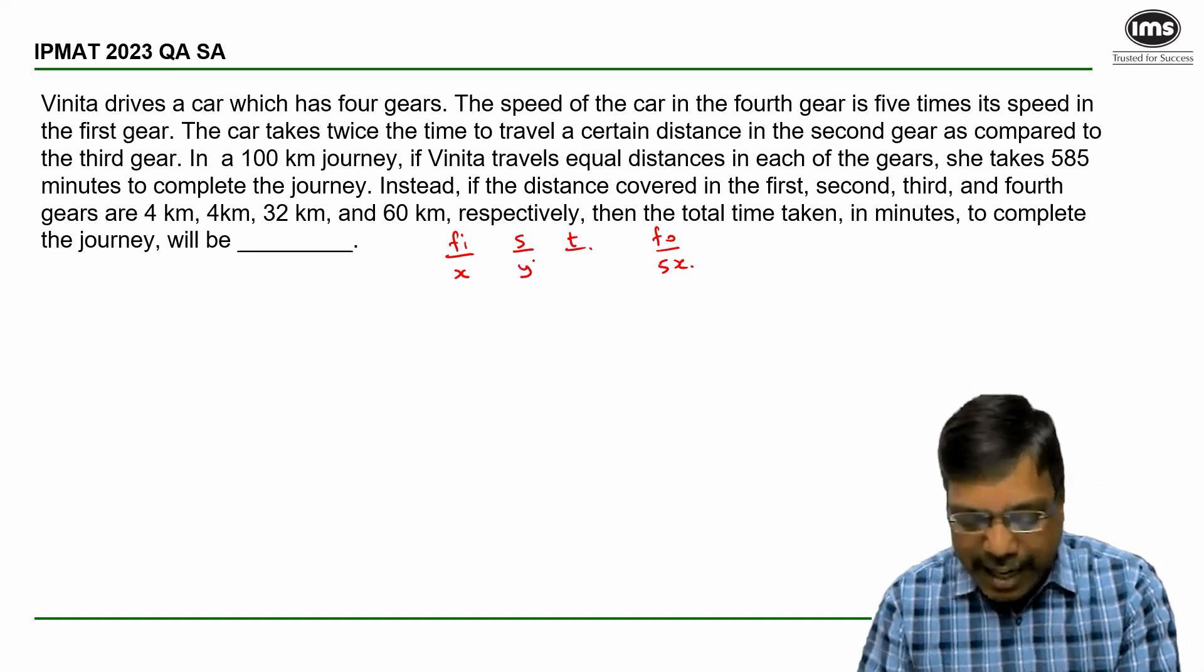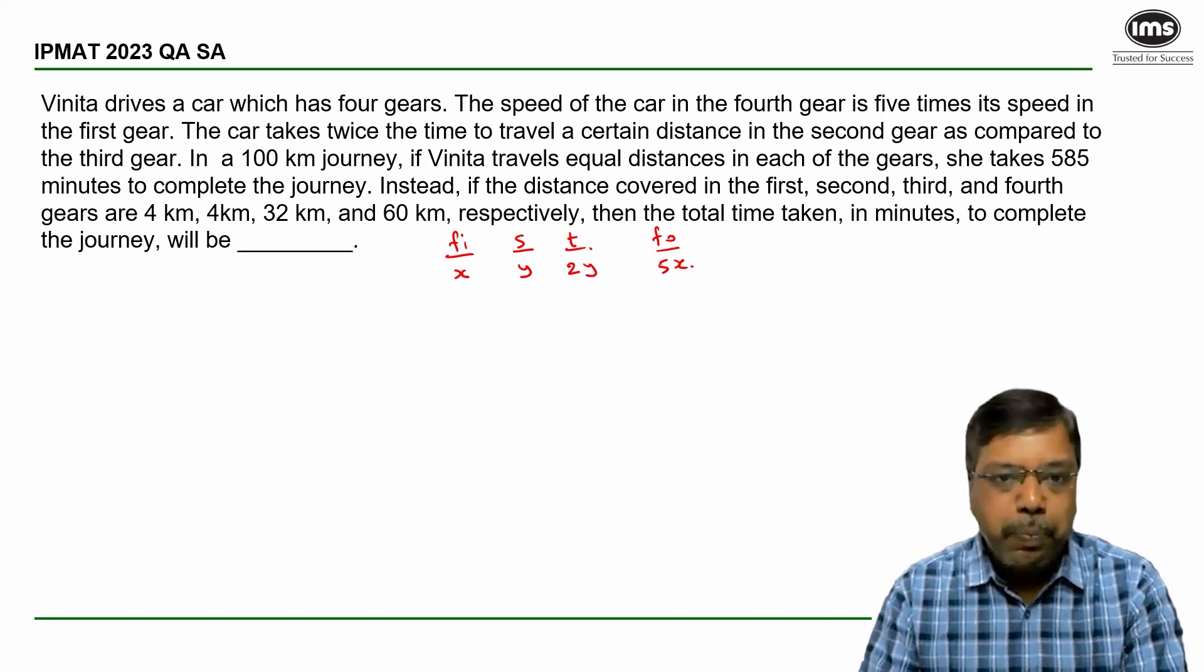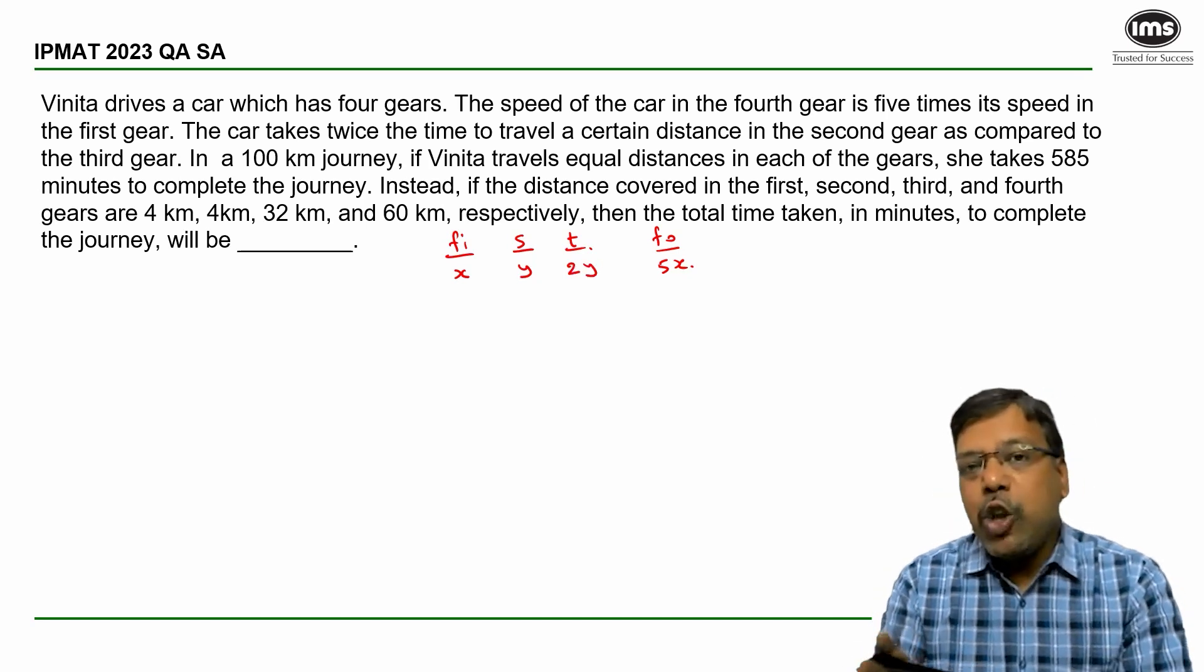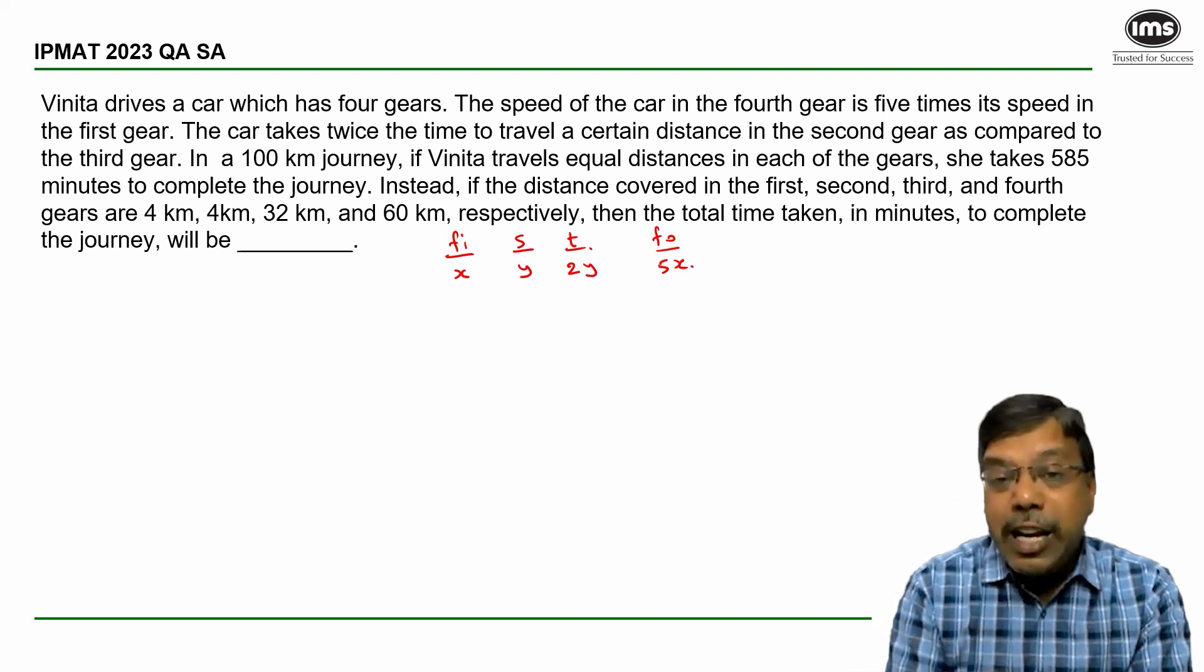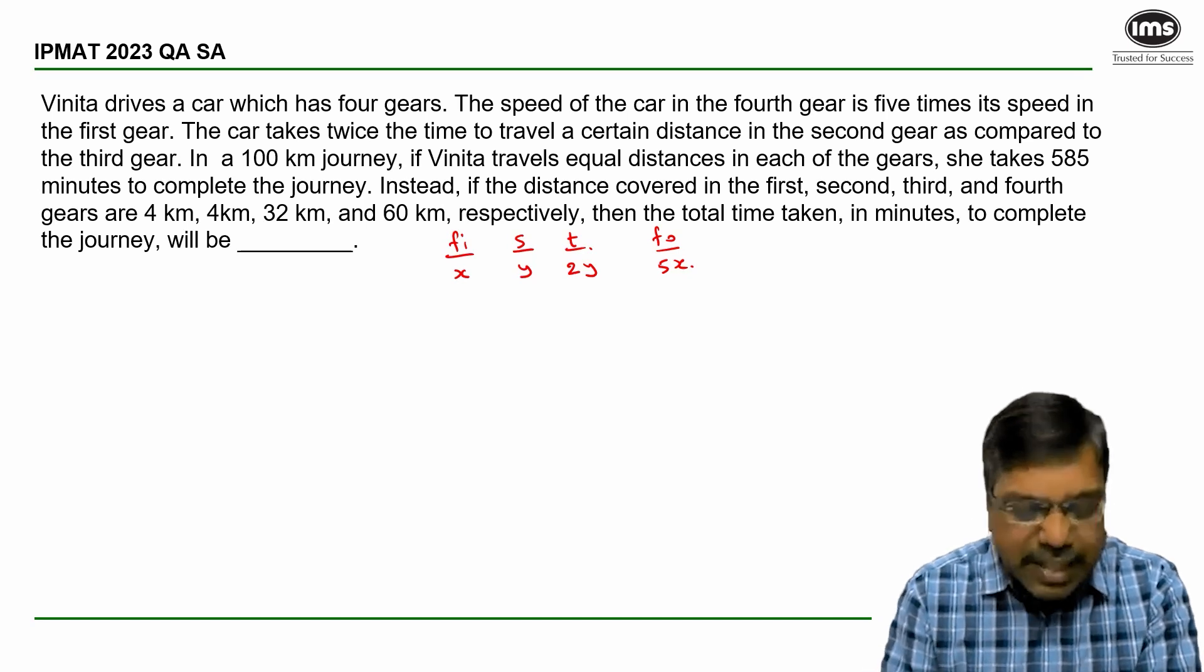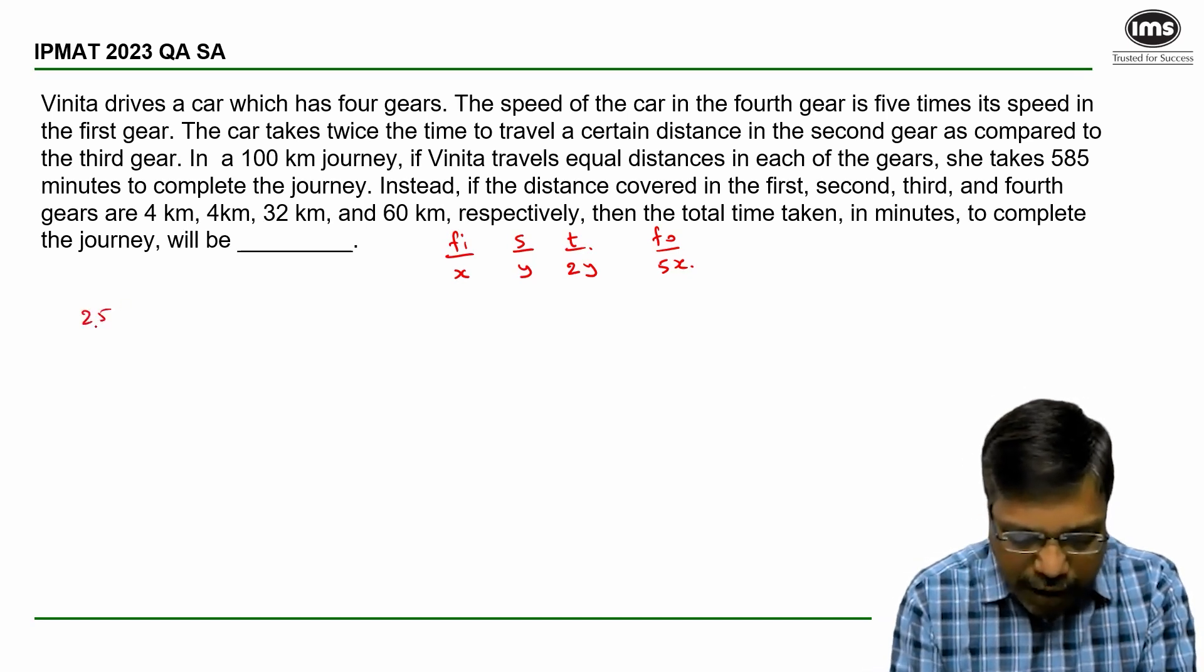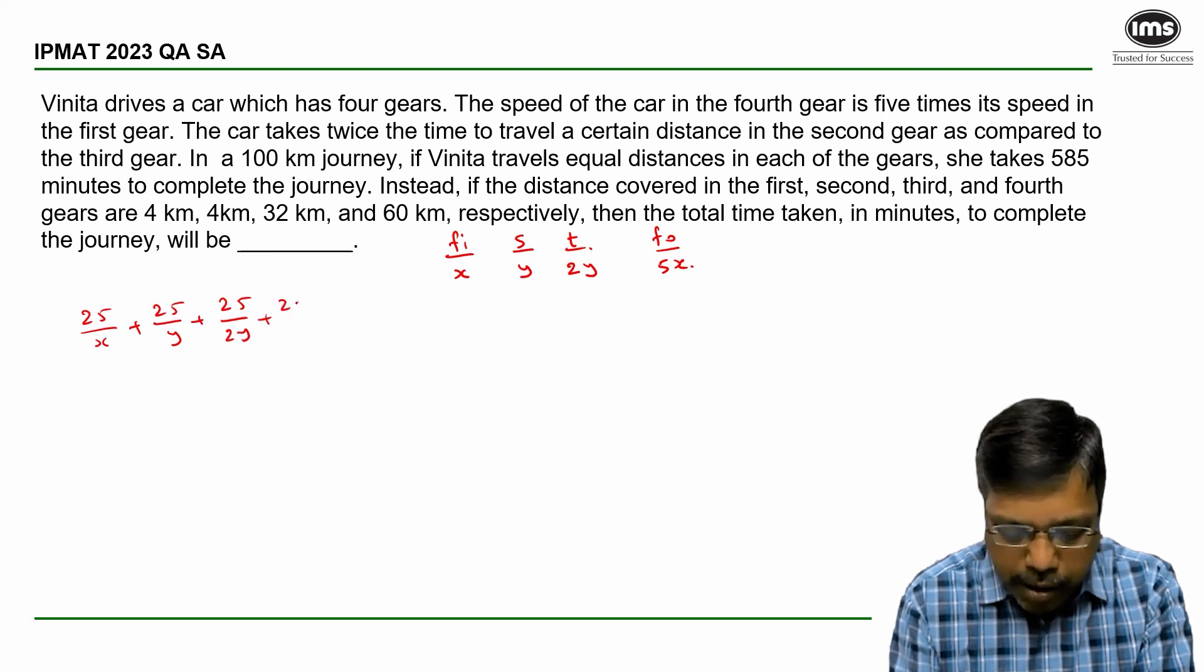So if I say speed of the second gear is y, speed of the third gear is 2y. Now a distance of 100 kilometers is covered in 585 minutes, where equal distance was covered with each gear. So time is distance by speed. So 25 kilometers at a speed of x, 25 kilometers at a speed of y, then 2y, then 5x is equal to 585.